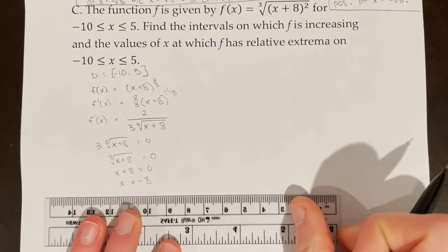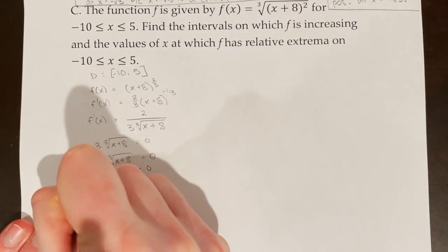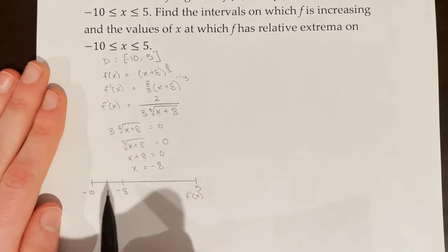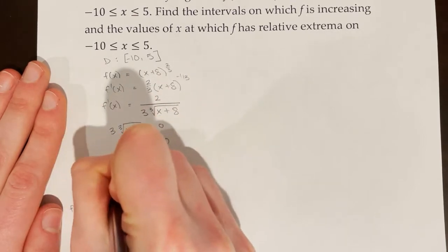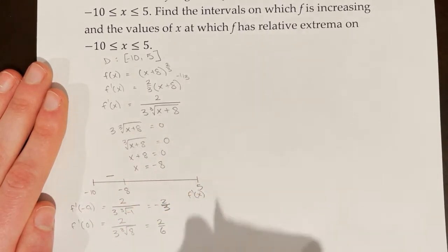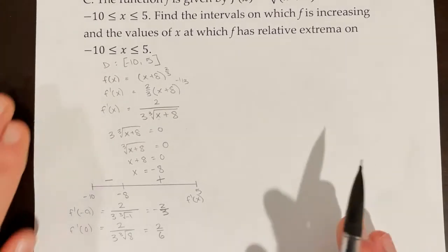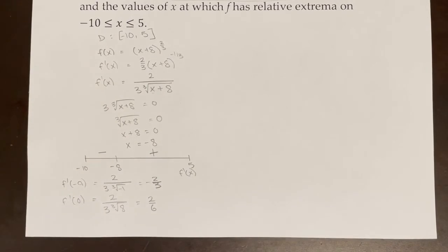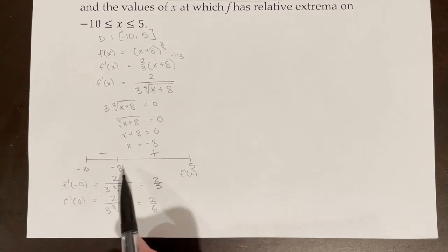When I make my sign chart, because I'm given a restricted domain, it only goes from negative 10 to 5, with negative 8 marked on it. Testing f prime of negative 9 gives negative 2 thirds — negative in that interval. Testing f prime of 0 gives 1 third — positive. So f is increasing on the closed interval from negative 8 to 5, because f prime of x is positive on the open interval from negative 8 to 5.